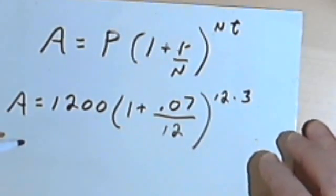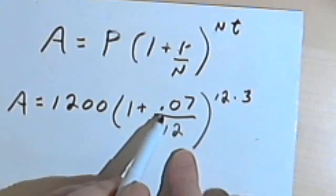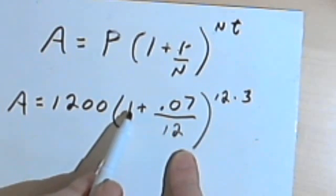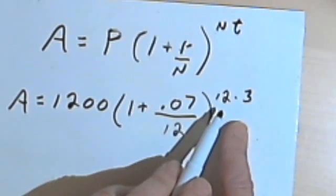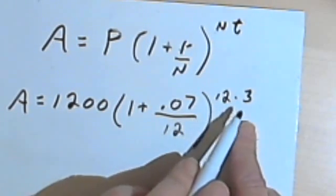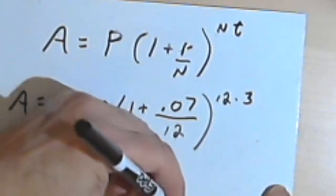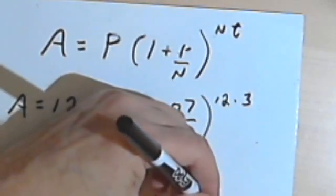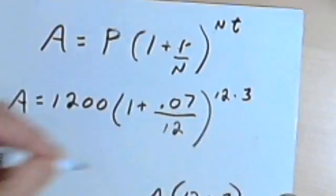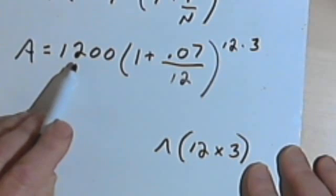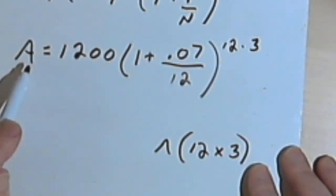So what I'm going to do in my calculator is I'm going to figure out what 0.07 divided by 12 is. I'm going to add a 1 to that, then I'm going to raise that either to the 36th power or to the 12 times 3, make sure that 12 times 3 is in parentheses. And whatever I get, I'll take that and multiply it by 1,200, and that will be my result.